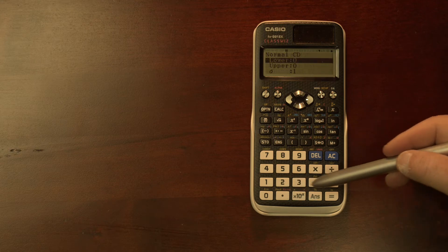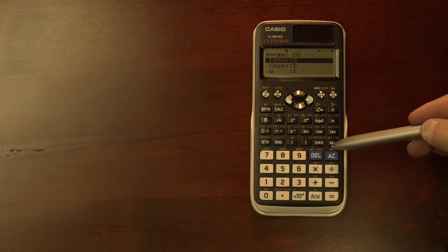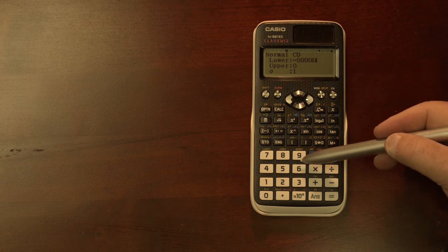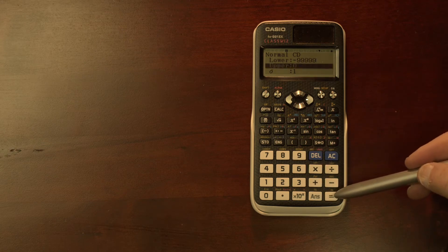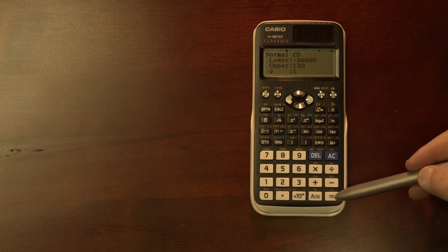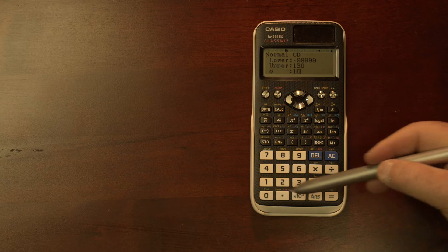So we're going to press number 2 and here we have to enter in the lower value. If we want it to be evaluated from negative infinity we have to put in a large negative number, and then for our example we're going to use 130 as the upper. The standard deviation for the population is 10 and the mean value we'll put in is 100.